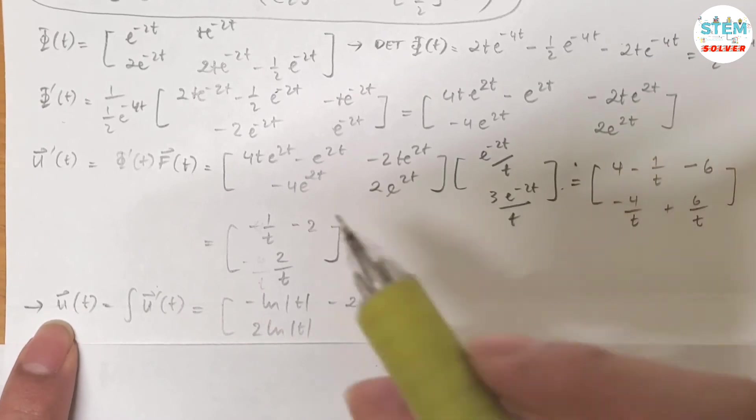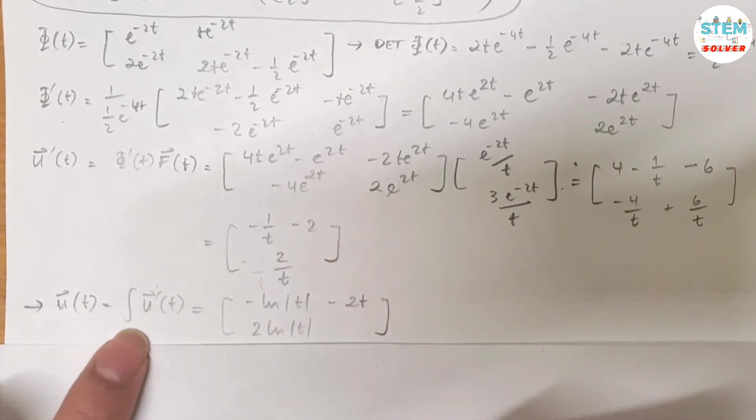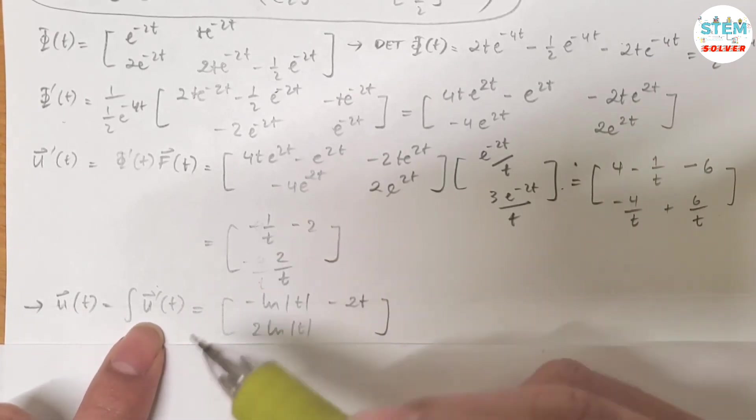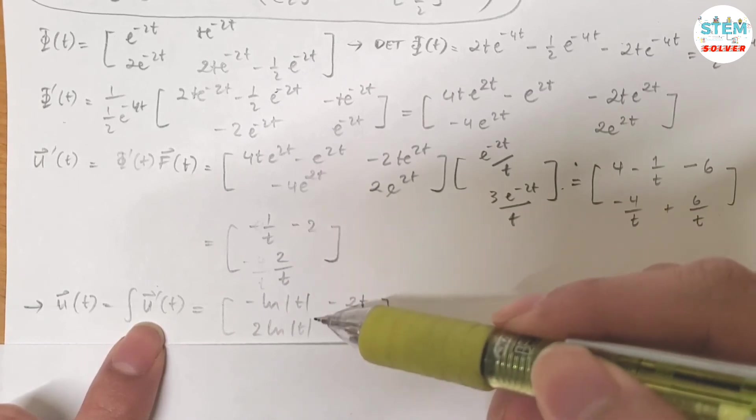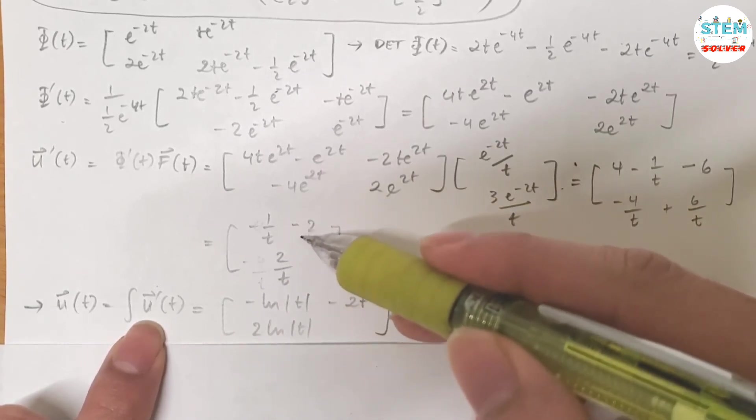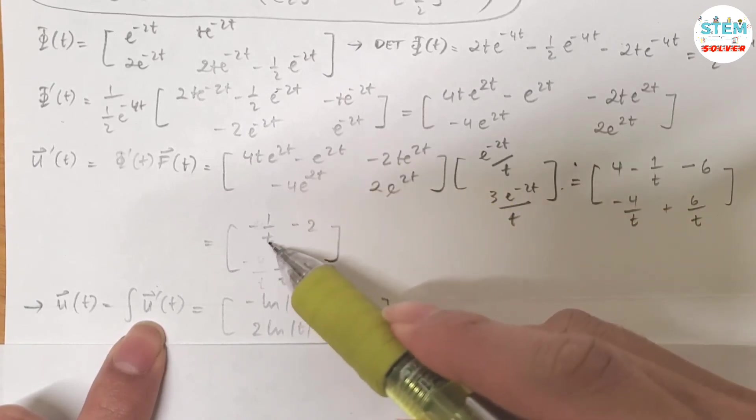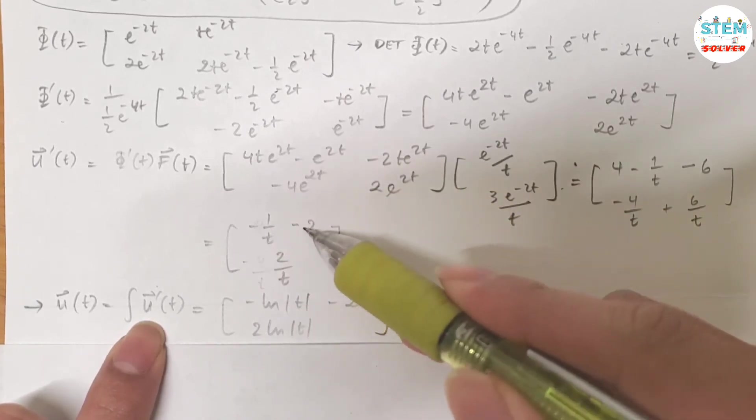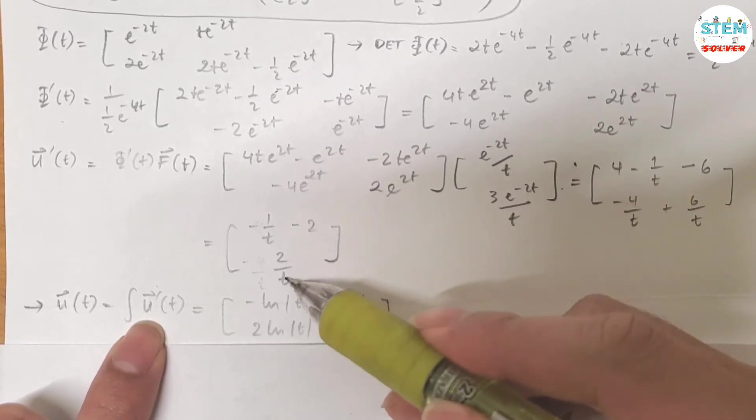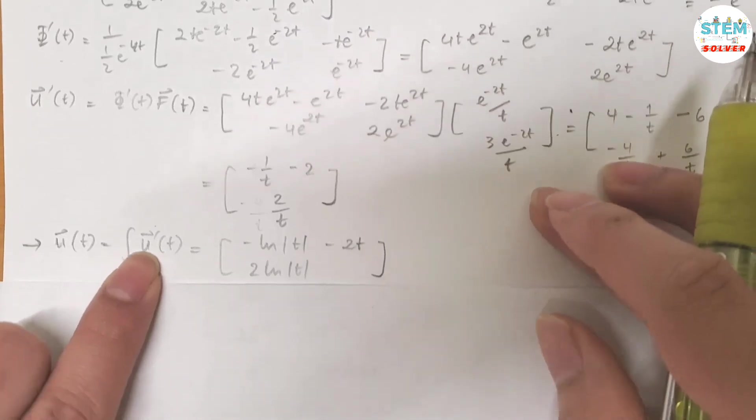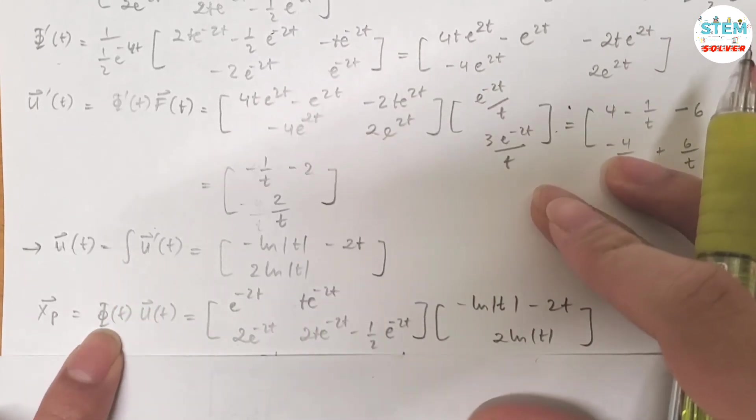Now for u(t), it is equal to the integral of u prime of t. So take the integral of this one, it gives me this one. This is basic integral, so I'm not gonna spend time over it. Like an integral of negative 1 over t is negative natural log of t minus 2t. Same thing here, integral of 2 over t is 2 times natural log of t.